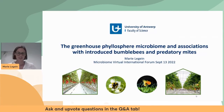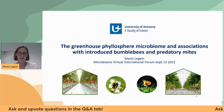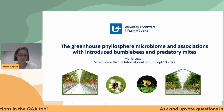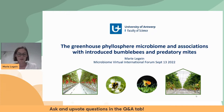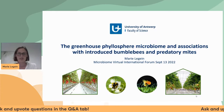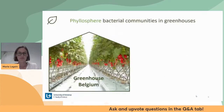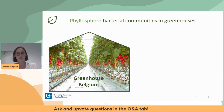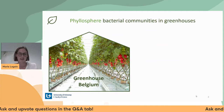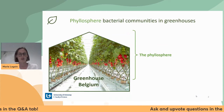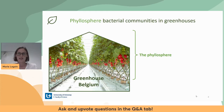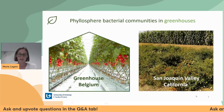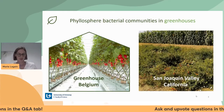Thank you for the opportunity to talk here. I will be talking about the greenhouse phyllosphere microbiome. Just like humans, plants are surrounded by microbes, and these microbes have an effect on the health status of the plant. I focus on the phyllosphere bacterial communities in greenhouses — the phyllosphere being the above-ground parts of plants — mainly the leaves.